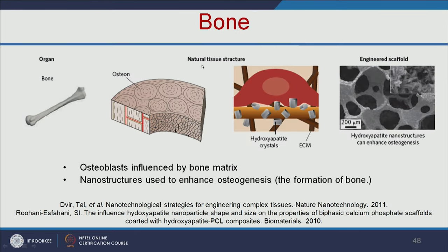The next example is bone. Osteoblasts are influenced by the bone matrix. We can make hydroxyapatite nanostructures with a porous structure similar to bone. These nanostructures can enhance osteogenesis — that is, bone formation.